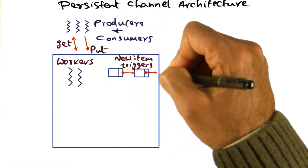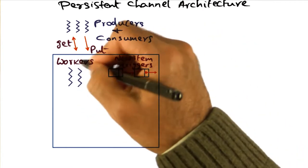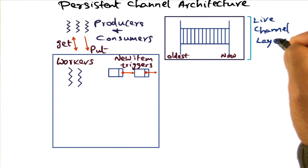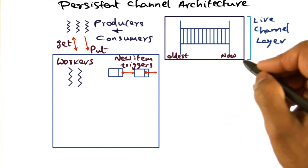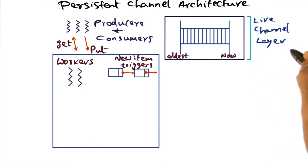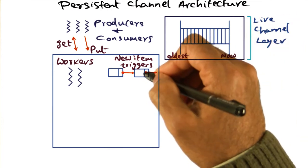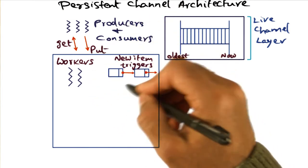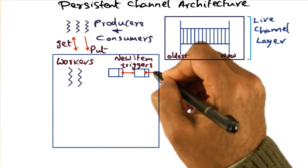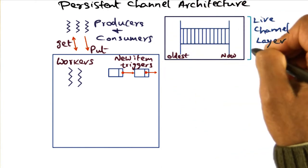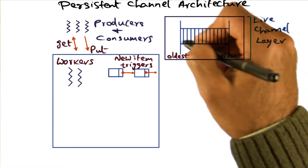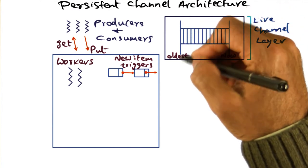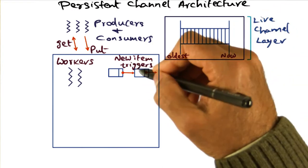Whenever a producer puts an item, that results in new item triggers that are going to be generated by the worker threads to the rest of the implementation. The implementation of the channel architecture is a three-layer architecture. The top layer is the live channel layer of the architecture, and this is the layer that reacts to the new item triggers coming from these worker threads working on behalf of a put call from a producer. The live channel layer is the one that holds a snapshot of items that have been generated on a particular channel.